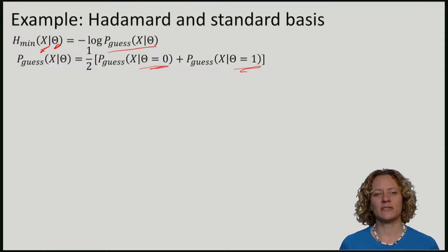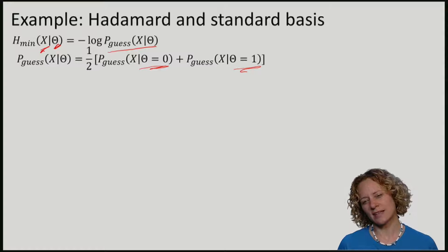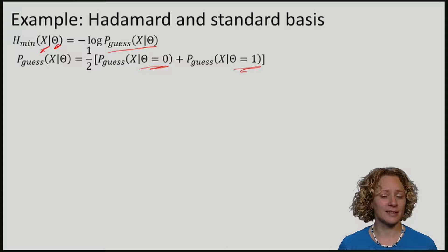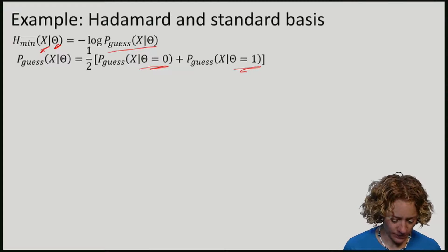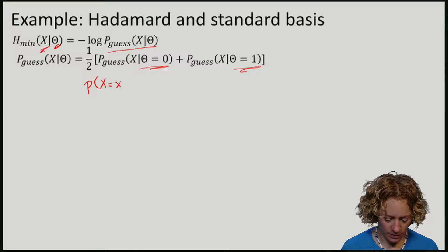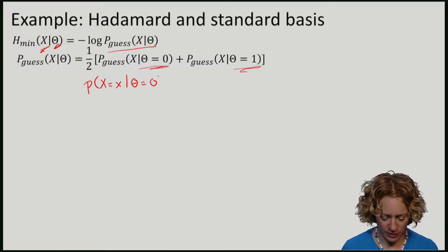To compute this, let's first have a look at what this guessing probability really is. Remember that Eve will just get the classical bit that is most likely. For any state rho A that she prepares, there will be some probability of getting measurement outcome X if she measured in that basis, for example, the standard basis.